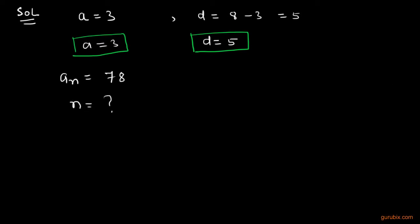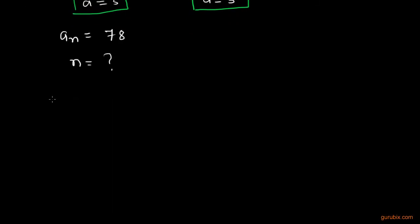So, we shall use the general term of the AP. The general term of AP is AN = A + (N-1) × D. And we shall now put the values of A, D, and AN.